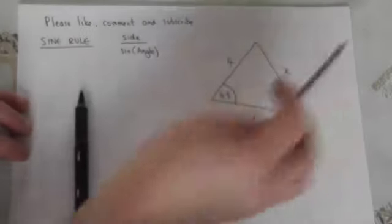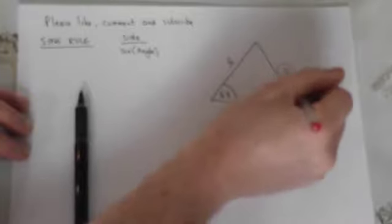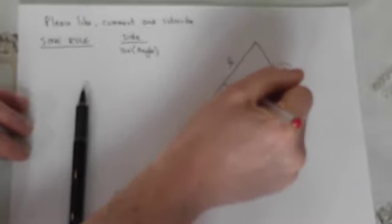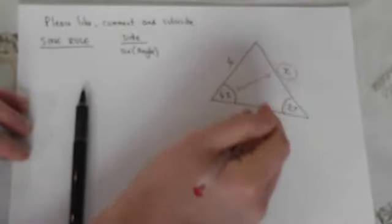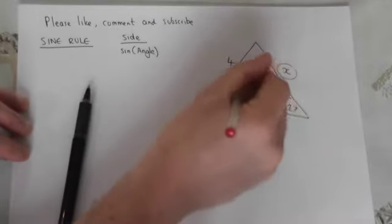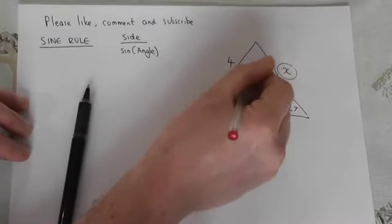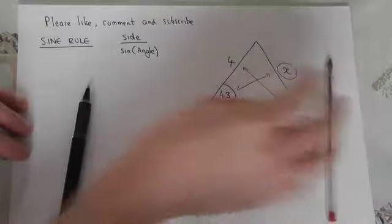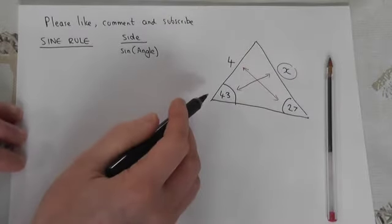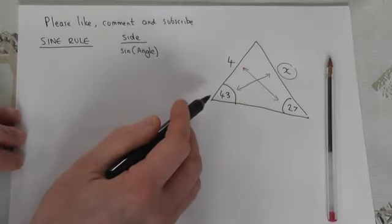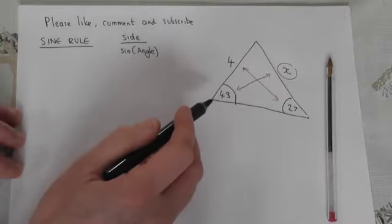In this triangle we have an unknown side opposite a known angle and a known side opposite a known angle. The sine rule lets us find out what the unknown side is and here's how it works. So the equation...